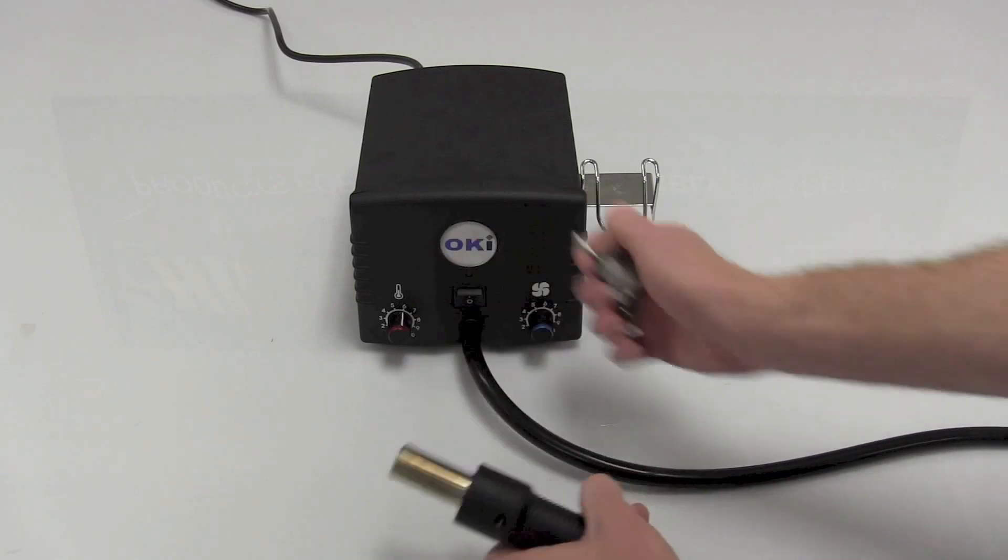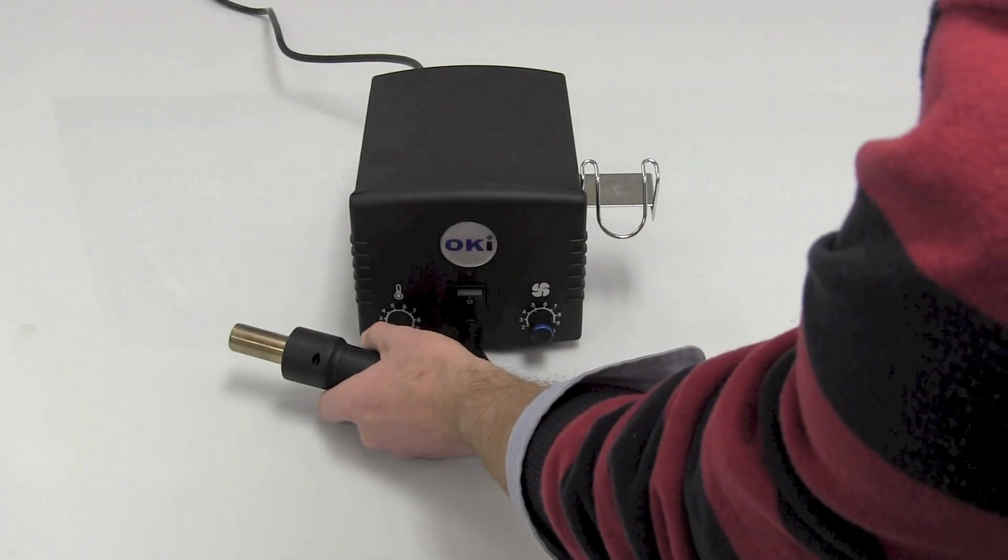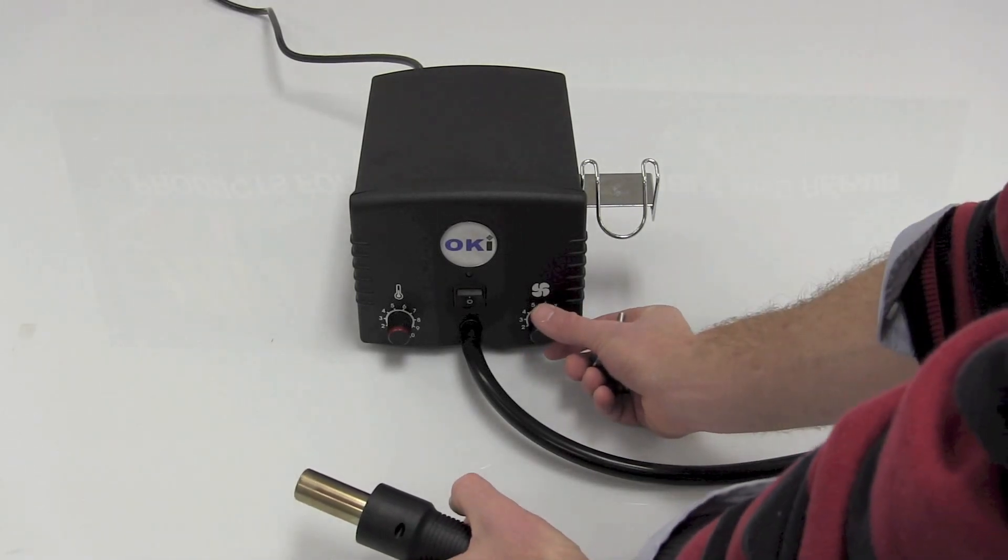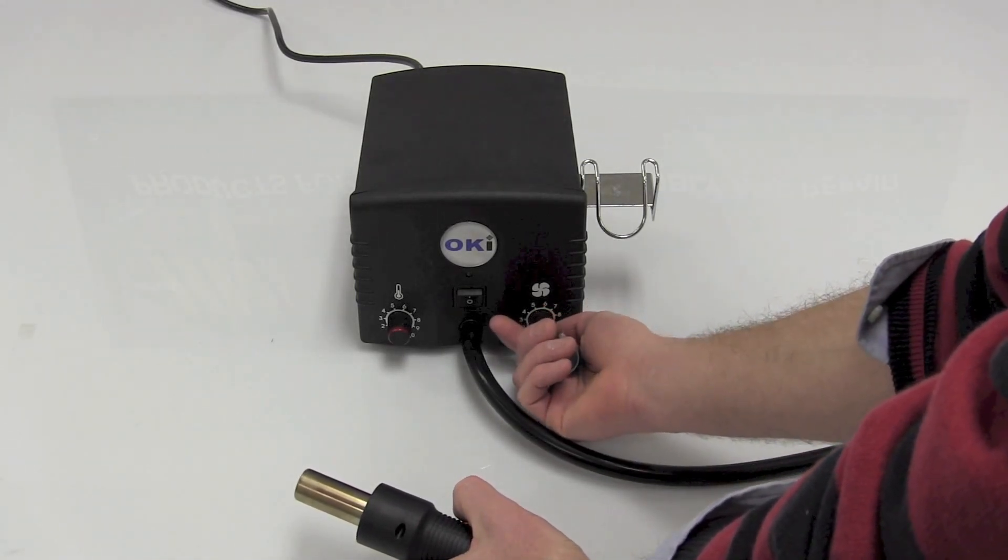It comes with a 5mm nozzle. Your temperature dial will go all the way down from approximately 200F to up to about 900F. Your airflow down from 6L per minute up to 25L per minute.